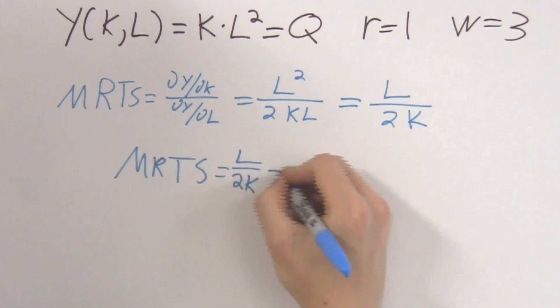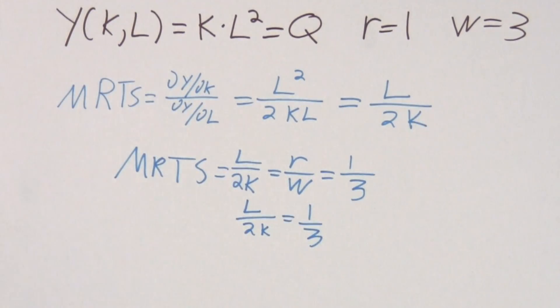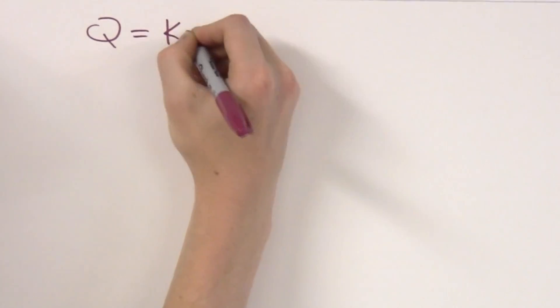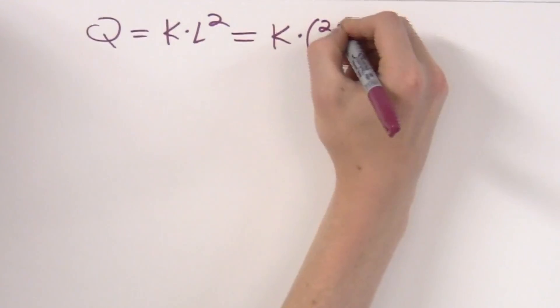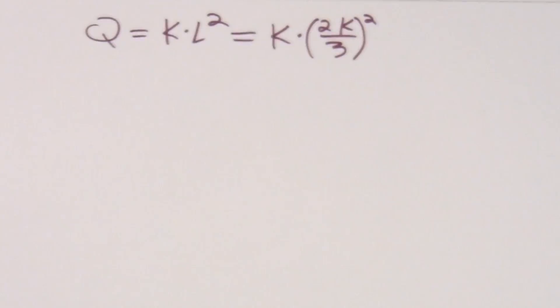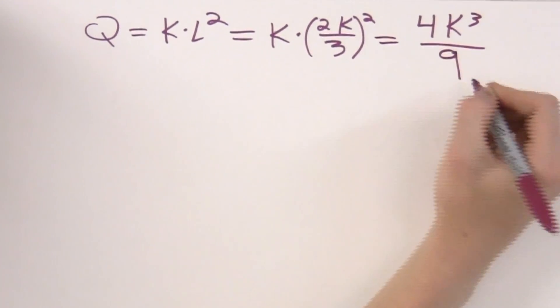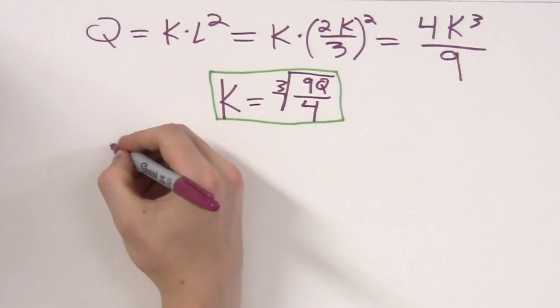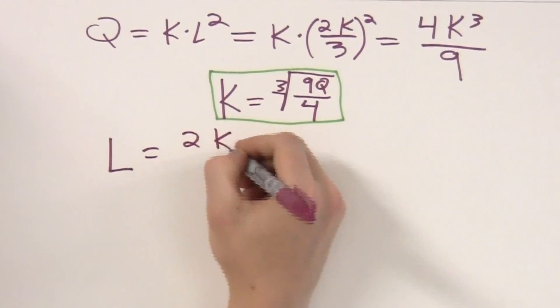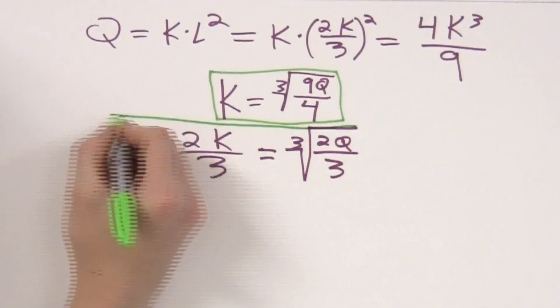If we set this equal to the price ratio, r over w, which is 1 third, we get that l over 2k equals 1 third. Rearranging, we get that l equals 2k over 3. If we go back to our production function, q equals kl squared, we can plug in the value we got for l to get k times the quantity 2k over 3 squared. Multiplying this out, we get that q equals 4k cubed over 9. Solving for k, we get that k equals the cube root of 9q over 4. We found earlier that l equals 2k over 3, so we can substitute this value of k we just found to find that l equals the cube root of 2q over 3.